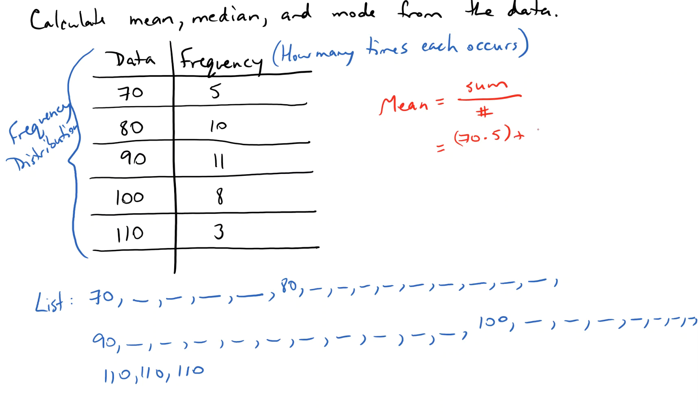Then I've got 10 80s, so that's 80 times 10. And then 90, 11 times. And then 100, eight times. And finally, 110, three times. That would be my sum. And then I would divide by how many data values there are. I could certainly count them, or I could just add my frequencies.